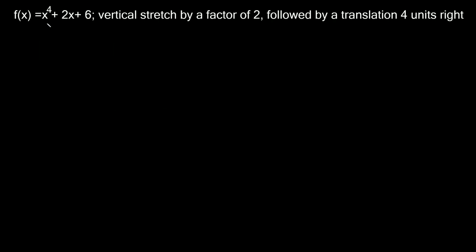Alright, let's try another one. Here we have f of x is equal to x to the fourth plus two x plus six. And it says the first transformation is a vertical stretch by a factor of two. Whenever we're talking about vertical stretching or shrinking, it's kind of intuitive. A vertical stretch by a factor of two just means we're going to multiply our whole function by two.